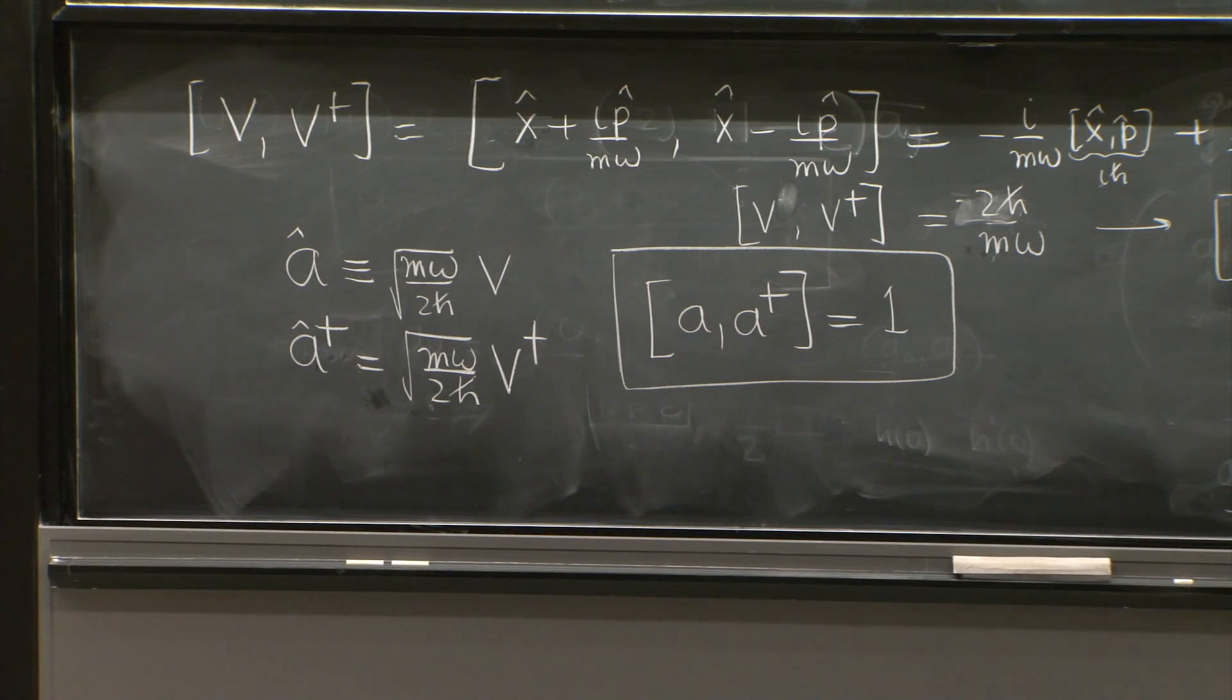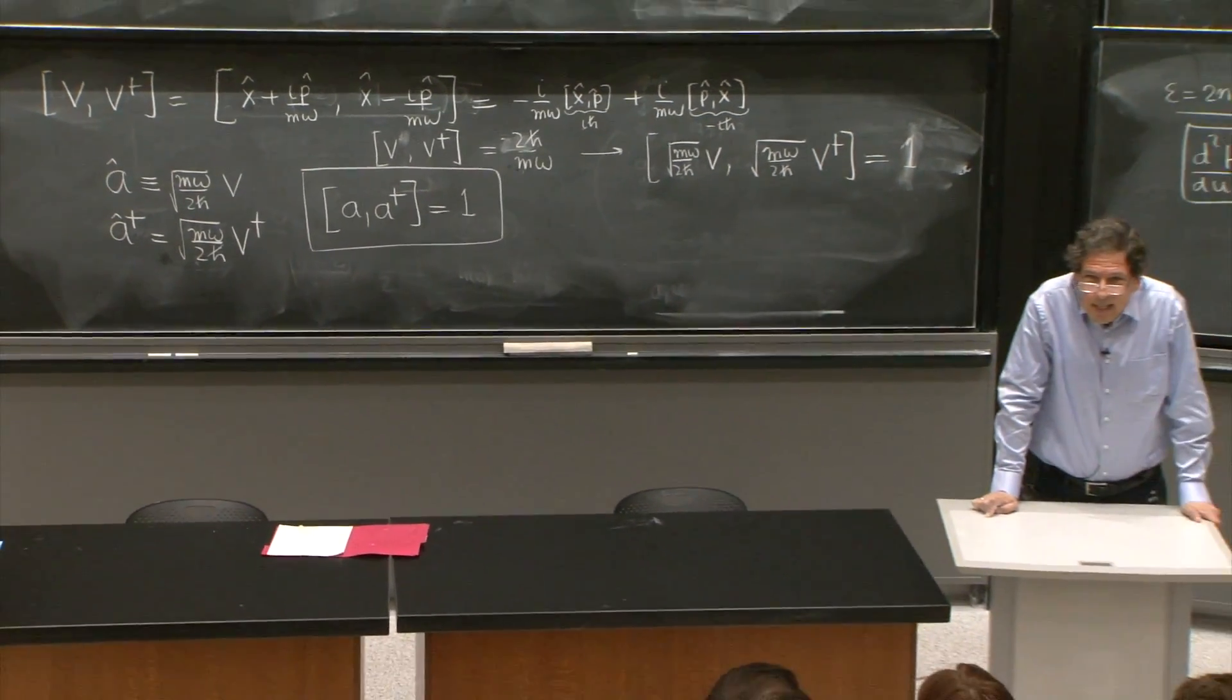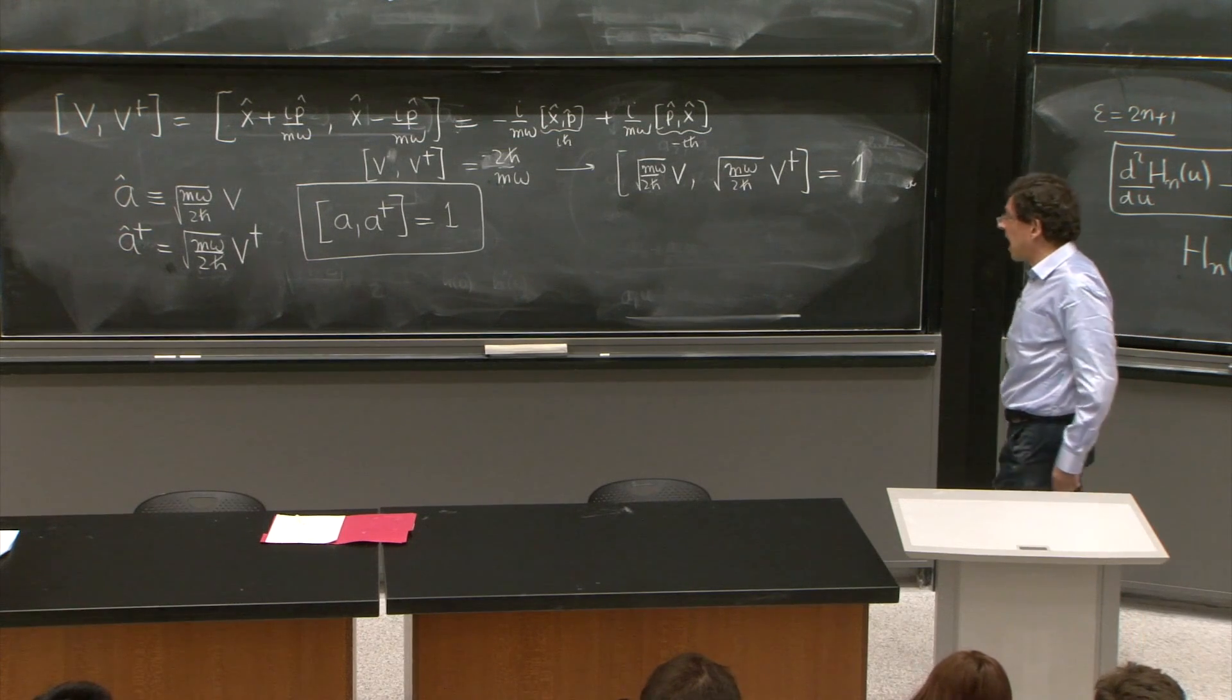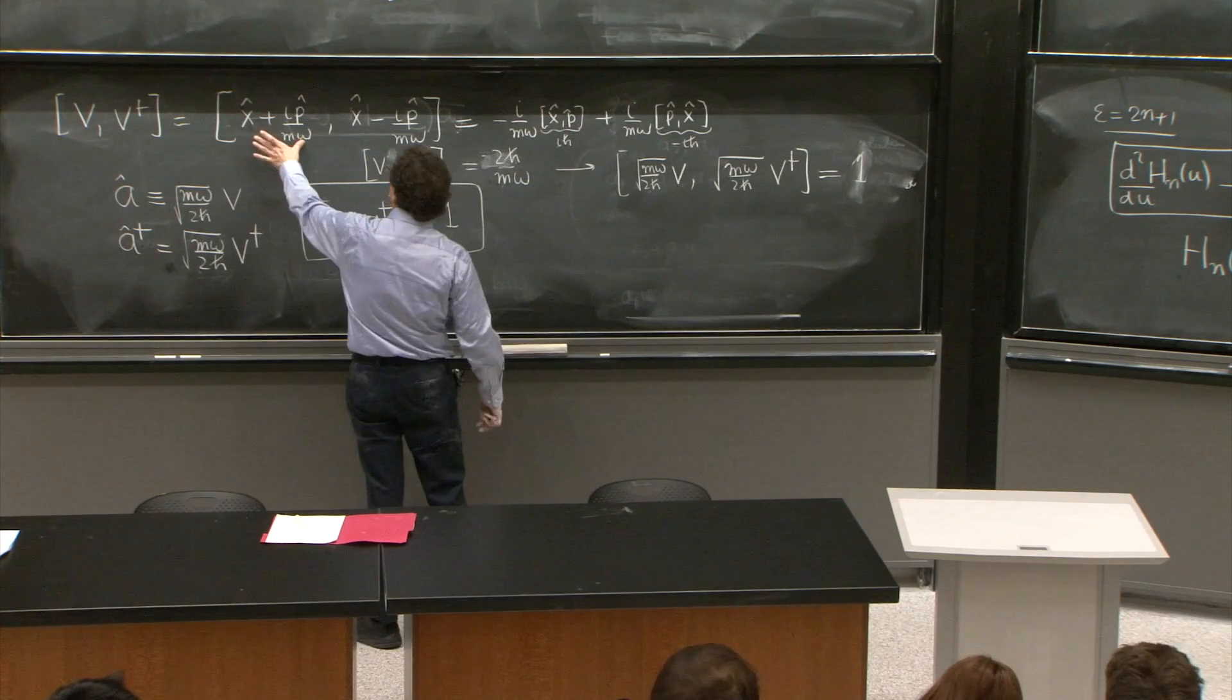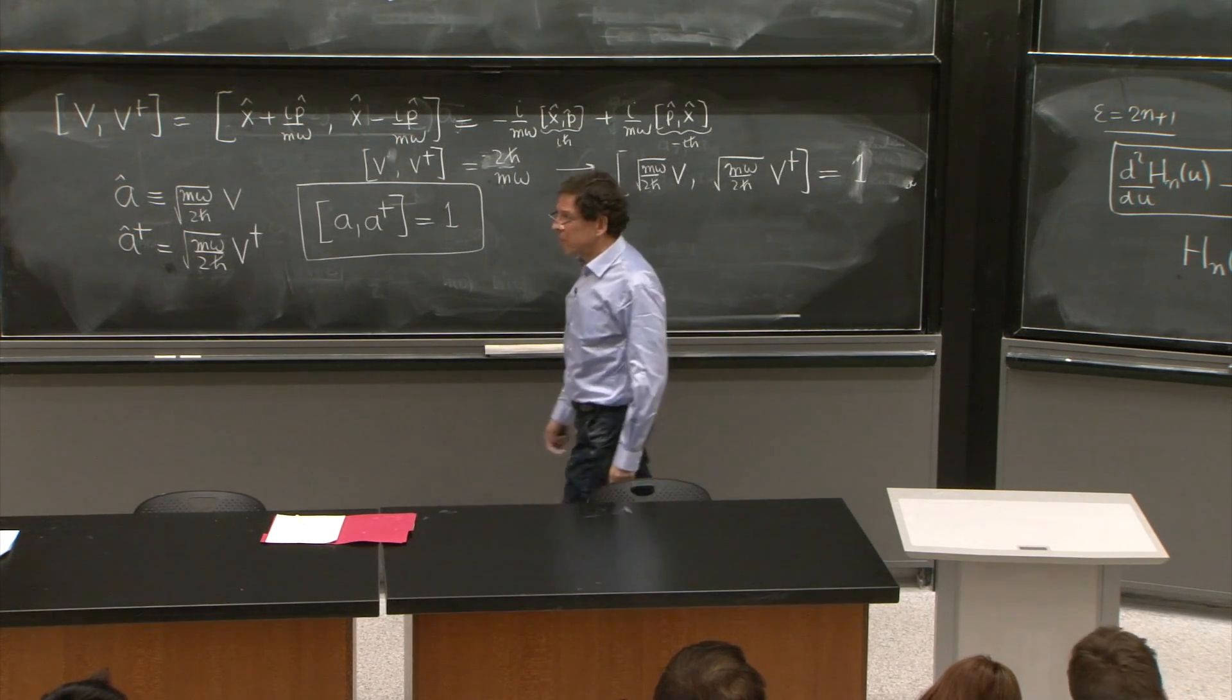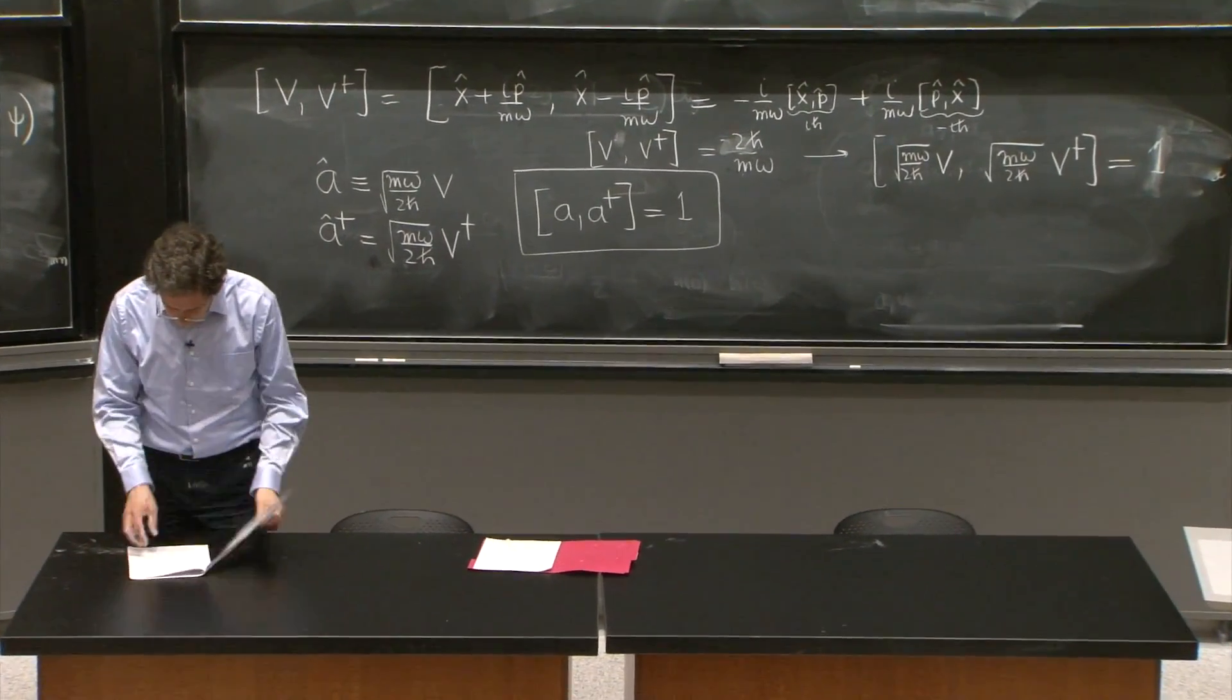Is a a Hermitian operator? Is it? No. A is not Hermitian. A dagger is different from a. OK. A is basically this thing. A dagger is this thing. So not Hermitian. So we're going to work with these operators. They're not Hermitian.